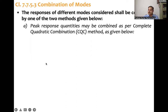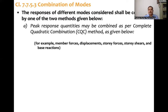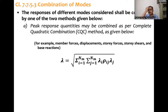Peak response quantities may be combined as per the Complete Quadratic Combination (CQC) method. What are these peak response quantities? It can be member forces, displacement, story forces, and base reactions. The formula gives lambda as the response quantity, and lambda_i and lambda_j are the response quantities occurring in different modes.